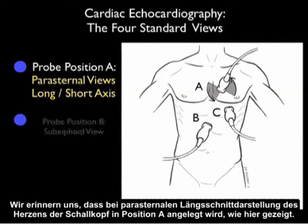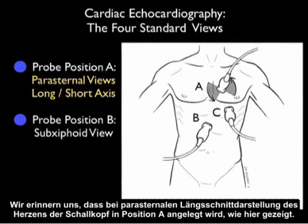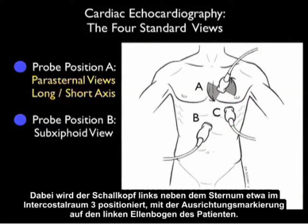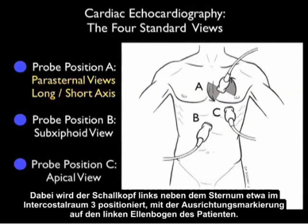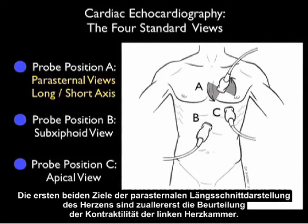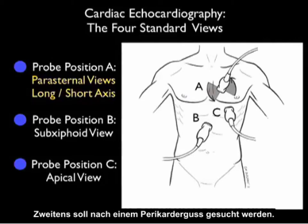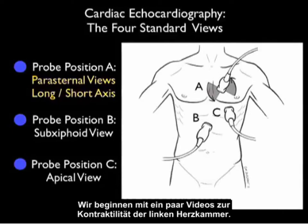Recall that the Parasternal Long Axis View of the heart is obtained by placing the probe into position A as shown here — just left of the sternum at about intercostal space 3, with the marker dot towards the patient's left elbow. The first two goals from this view are: first, to look for left ventricular contractility, and second, to investigate for a pericardial effusion. Let's begin by looking at some clips going over left ventricular contractility.